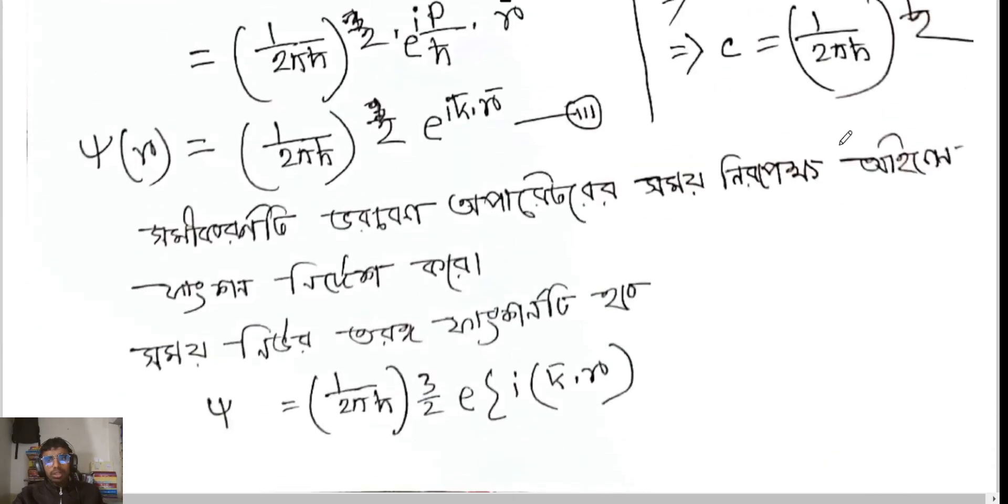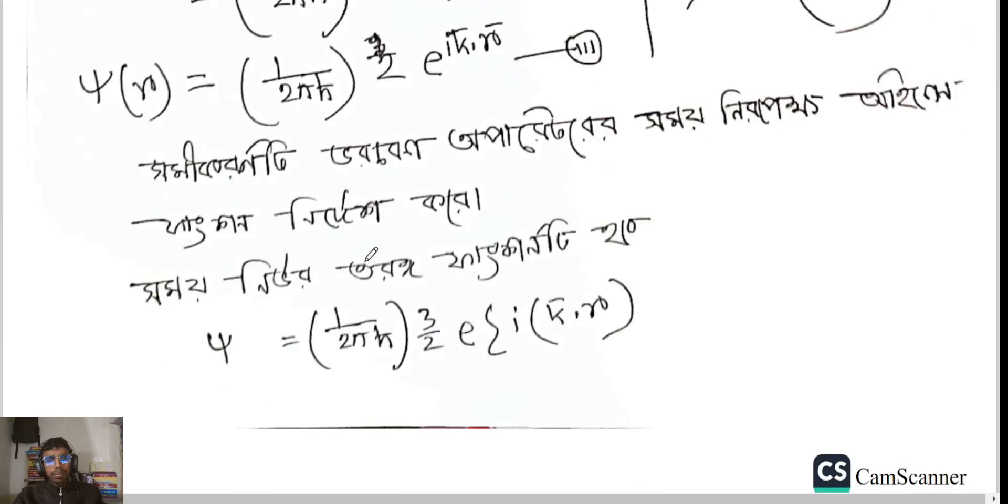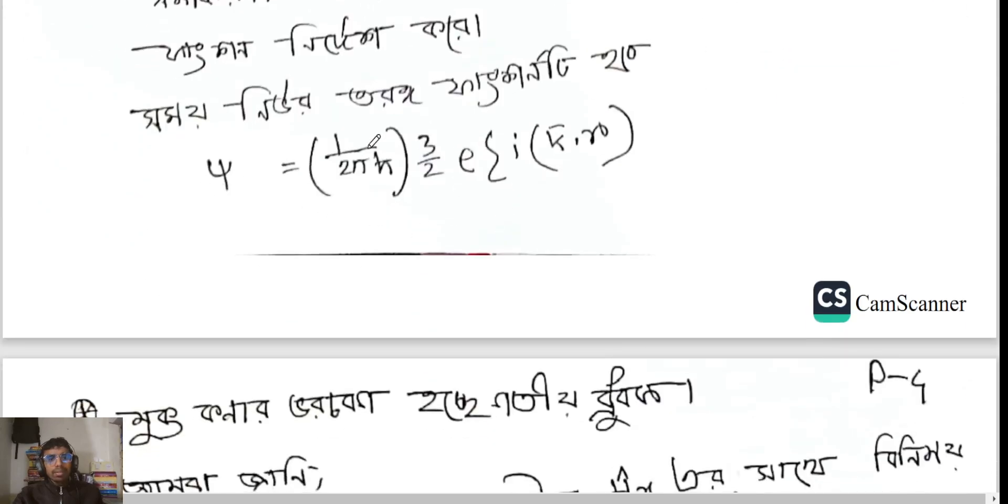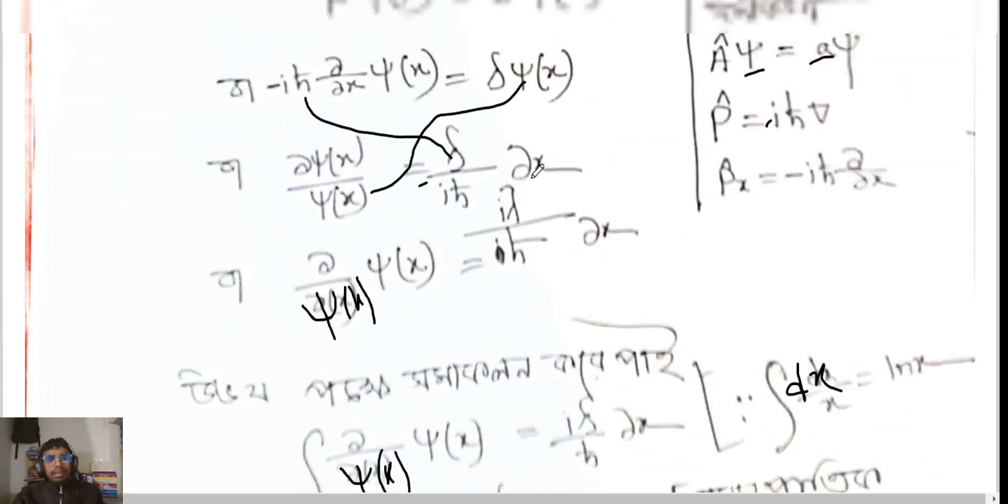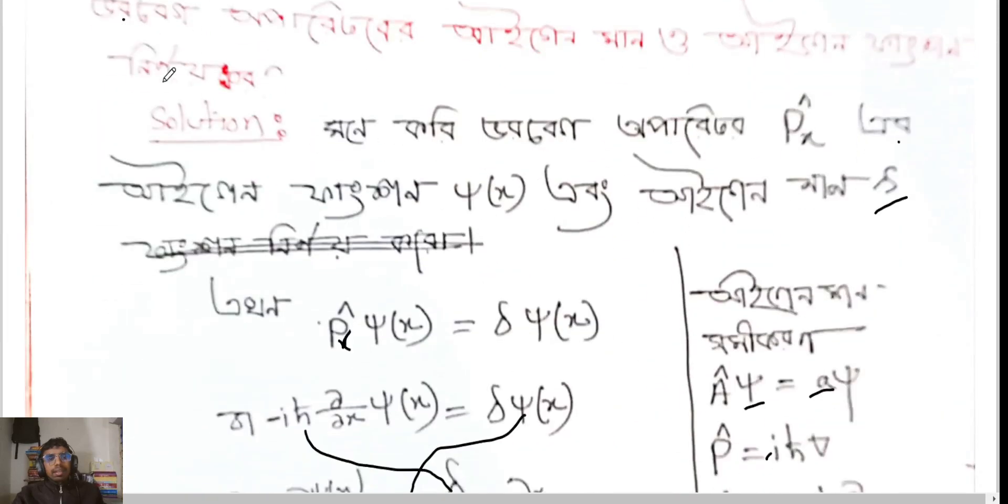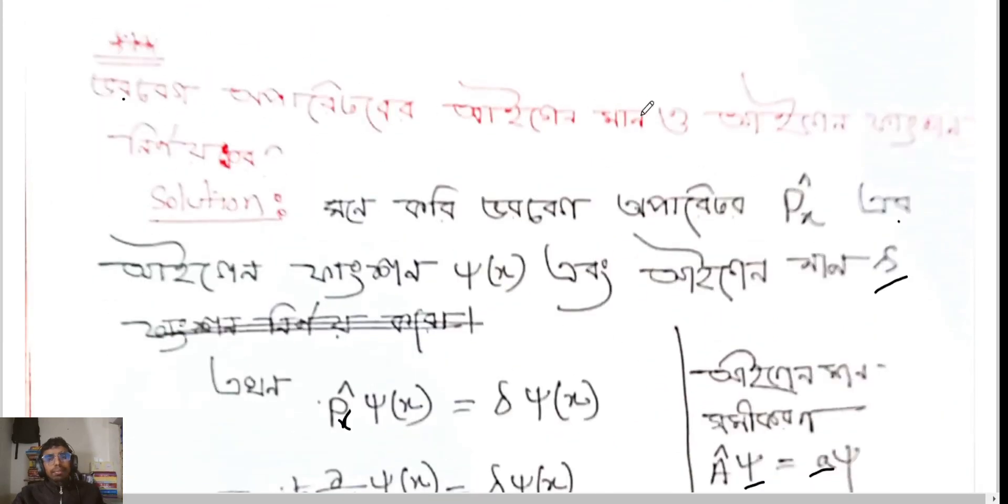Now the same current is the same function of the operator. So the same function of the thermo function is c i equal to e t to bar. e t to bar 1 and 2 pi s to 3 by 2 e t to bar k dot r. This is the same function of the operator. And even the function of the operator, the operator is the same function. If you are the same function of the operator, as well as we have the same function, you will know the same function of the operator.